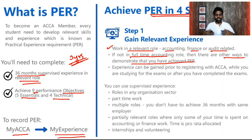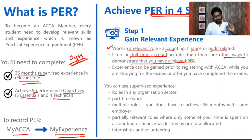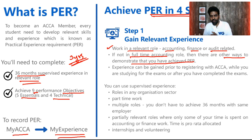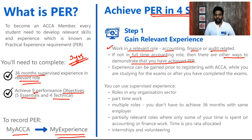Even if you are not in a full-time accounting role, there are other ways to demonstrate you have achieved your PER. For example, if you are an accounting tutor who taught accounting and finance for a long period, ACCA will give you one year of experience just because you are an accounting tutor. And if you are working part-time — only half the normal working hours — you can still gain half of that time. ACCA says even if you are not working full-time, if you work half-time over three years, you will get one and a half years of experience credit.